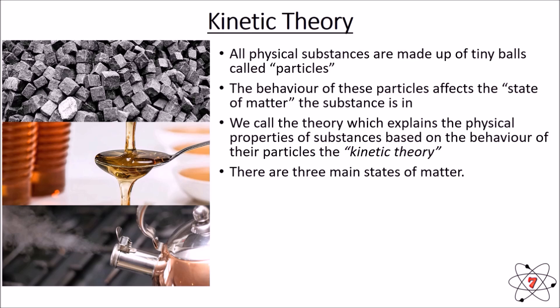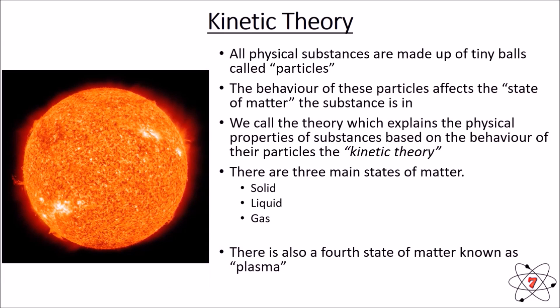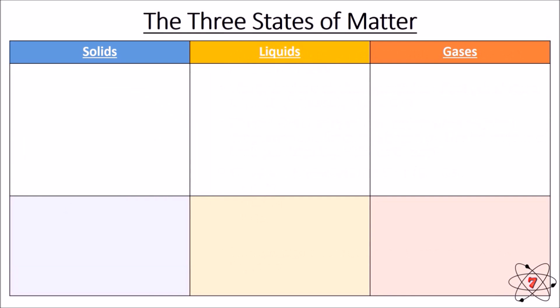There are three main states of matter that any substance can have: solid, liquid and gas. There is actually a fourth state of matter called plasma — 99.9% of all matter in the universe is plasma — but for our purposes we're not going to look at it in much detail, because it's mainly solids, liquids and gases that make up the earth and the world around us.